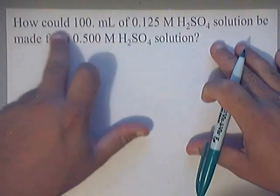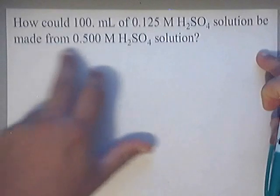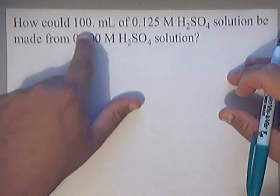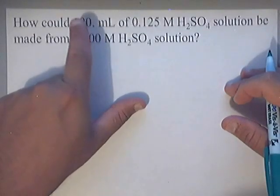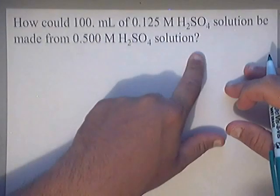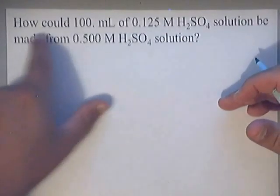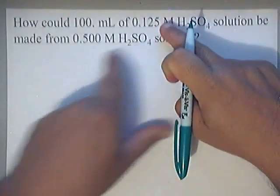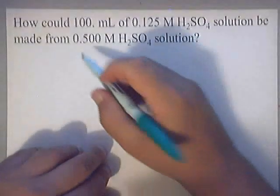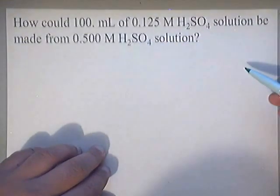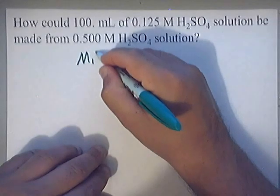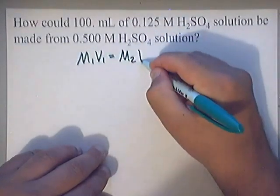In this problem, only one acid is mentioned throughout — H2SO4. You'll also notice they mention two volumes: 100 milliliters and asking how many milliliters to take. They mention molarity twice. Anytime you have no balanced equation, two molarities, and often two volumes, that's your indication to use a dilution equation.